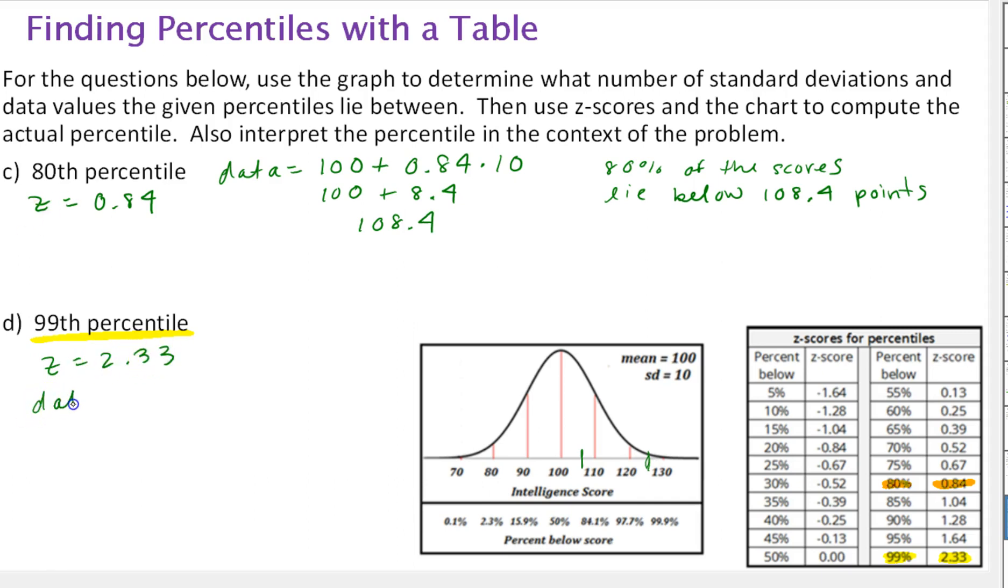And this would give us a data value or a score of 100 plus the z-score times the standard deviation. And this is 23.3. And we get a score of 123.3. So interpret: 99% of the z-scores lie below 123.3 points.